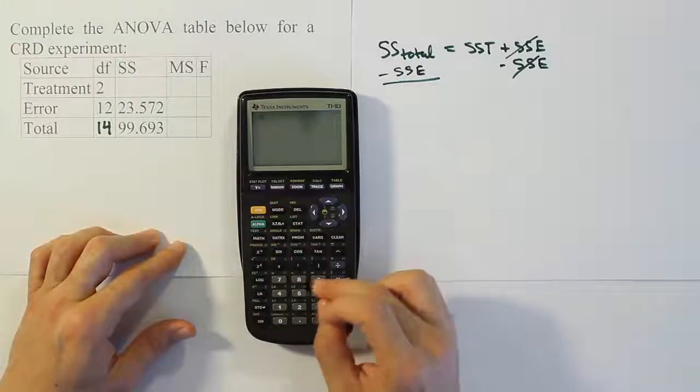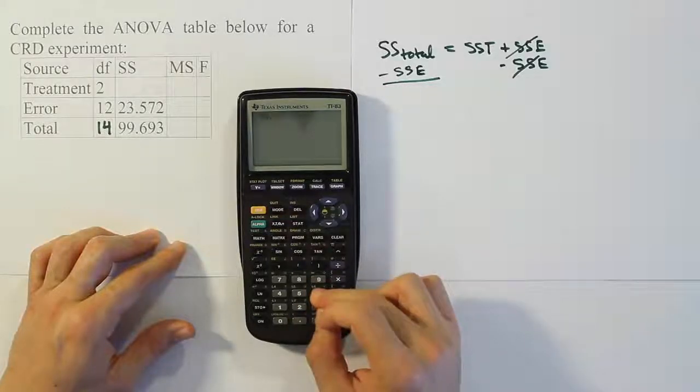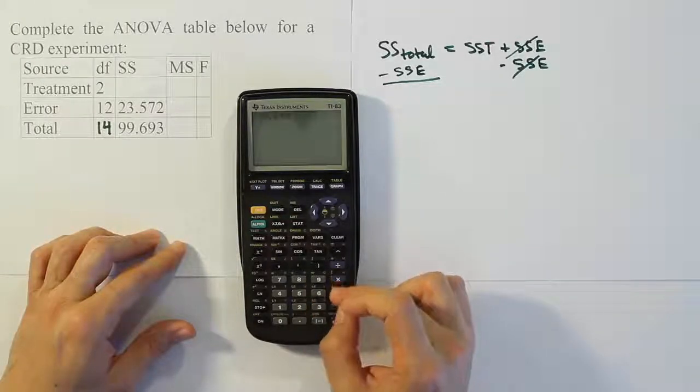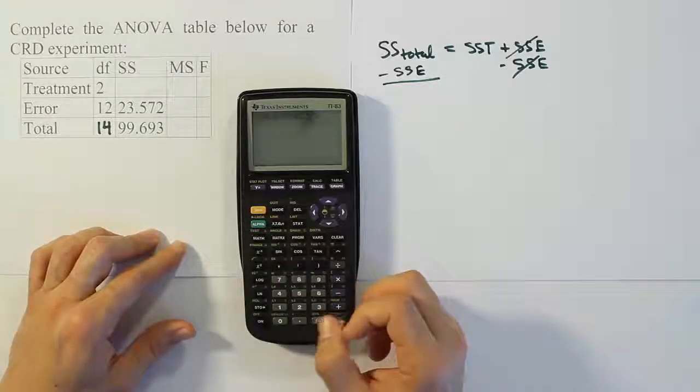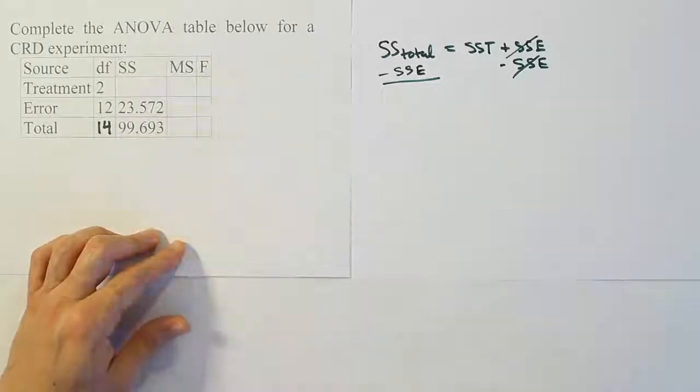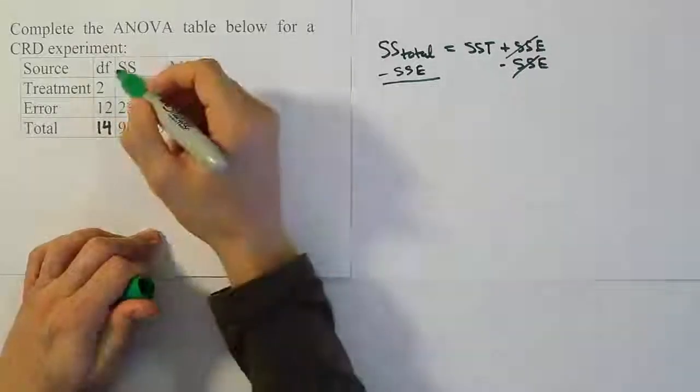So we're going to do 99.693 minus 23.572. And when we're done, we get 76.121.